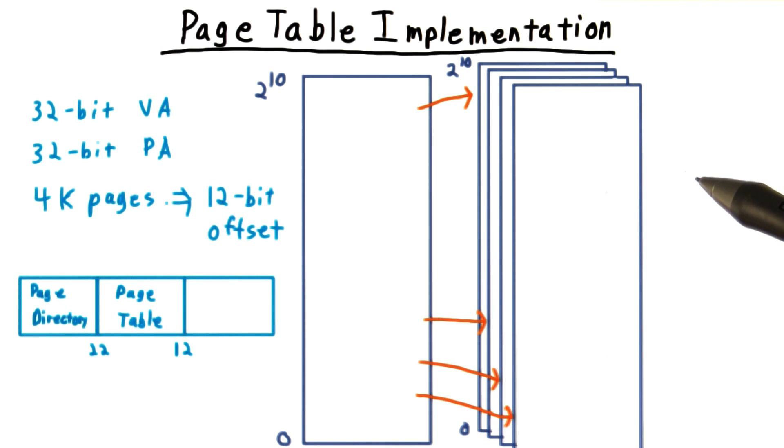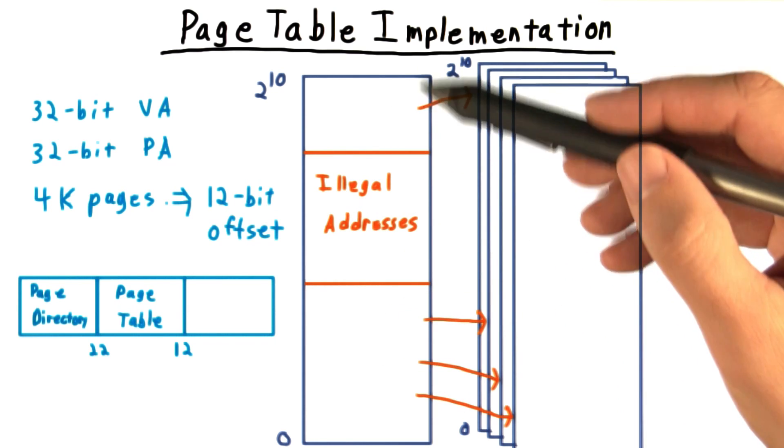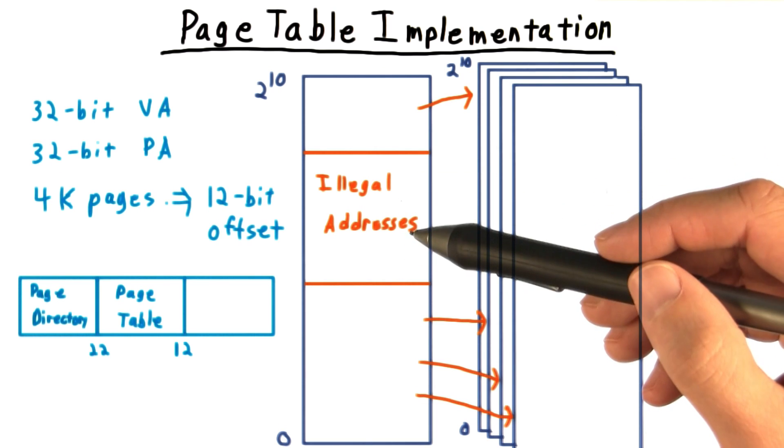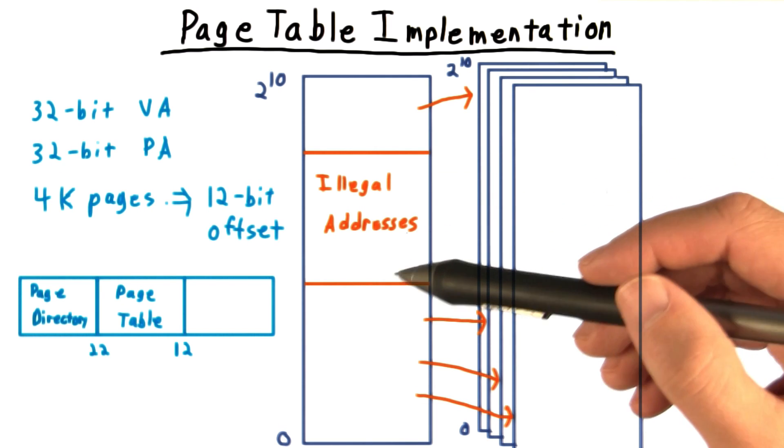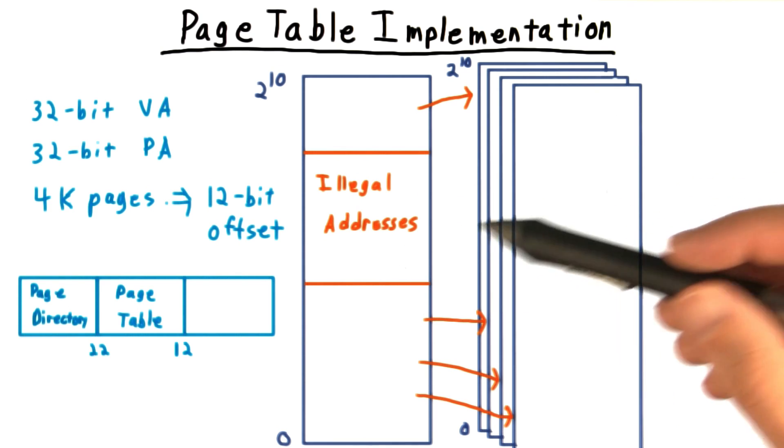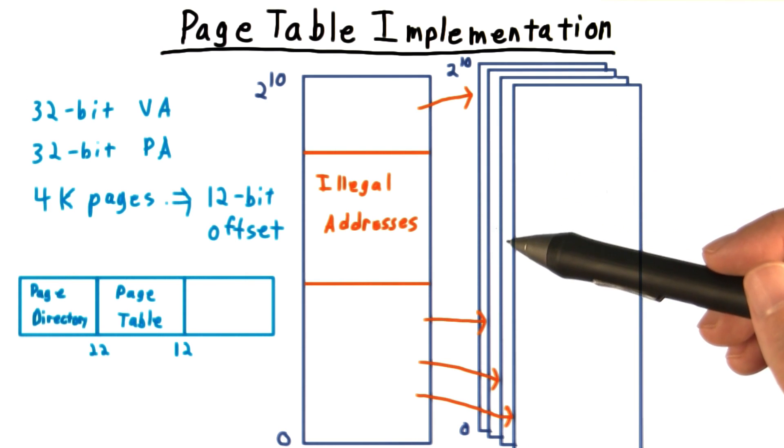Why does this help us use less memory? Well, in our virtual address space, we use addresses at the bottom and we use addresses at the top, but there's a vast empty region in the middle. Many of these unused addresses will have the same 10 high order bits. And for these, we won't even have a secondary table. Thus, we end up using not too much more memory for the page table than we really need to.